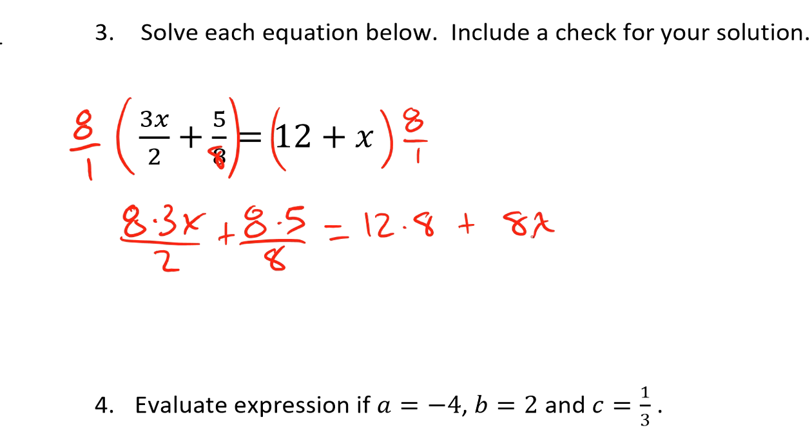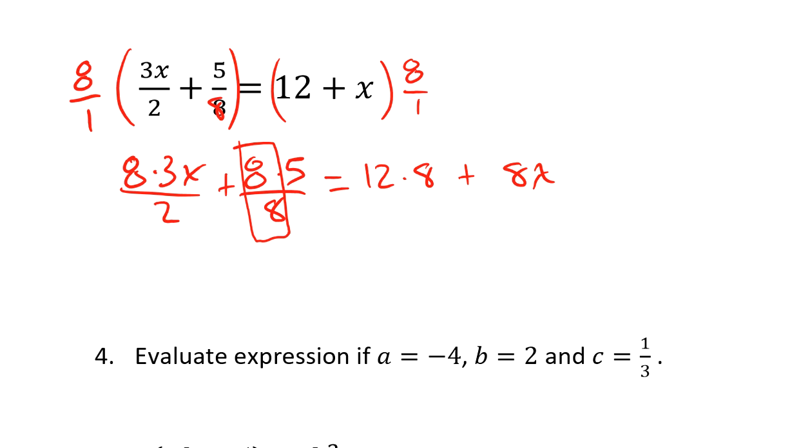Now I understand that 5 times 8 is 40. The reason why I don't write that is I want to make it easy for me to identify this giant 1. The other thing that I see here is 8 divided by 2 is 4. It turns out that this is 12x.